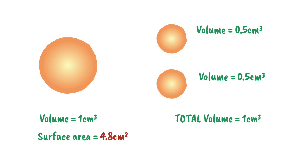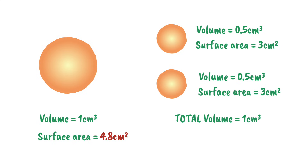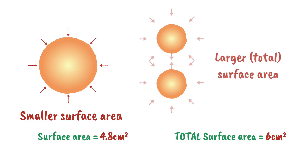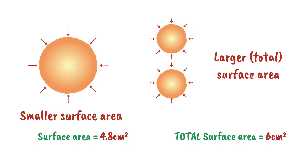If we calculate the surface area of each of these, we'd find it's about 3 centimeters squared each, giving a total surface area of around 6 centimeters squared. So if we split large lipid globules into many smaller ones, we provide more area for enzymes to break down lipids, speeding up digestion.